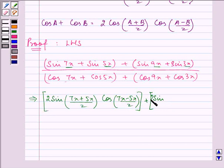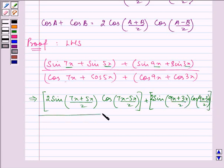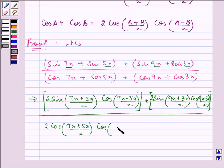2 sin of A plus B over 2 times cos of A minus B over 2 divided by... Now, here, cos A plus cos B will be written as 2 cos of A plus B over 2 times cos of A minus B over 2.